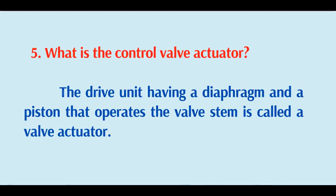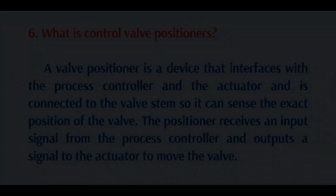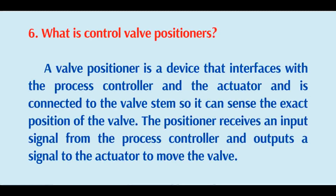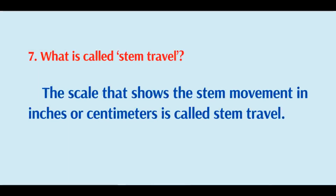What is a control valve actuator? The drive unit having a diaphragm and a piston that operates the valve stem is called the valve actuator. What is a control valve positioner? A valve positioner is a device that interfaces with the process controller and the actuator, connected to the valve stem so it can sense the exact position of the valve. The positioner receives an input signal from the process controller and outputs a signal to the actuator to move the valve.